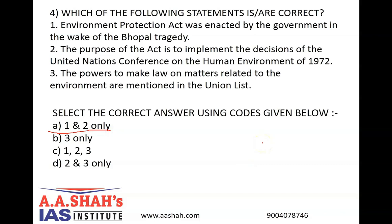The third statement is incorrect because environment is not included in any of the lists — List 1 Union, List 2 State, or List 3 Concurrent — in the distribution of legislative power by the Constitution. The Act empowers the Centre to take all such measures as it deems necessary. By virtue of this Act, the Central Government has armed itself with considerable powers like coordination of action by states, planning and execution of nationwide programs, laying down environmental quality standards, especially those governing emission or discharge of environmental pollutants, placing restriction on the location of industries, and authority to issue direct orders including orders to close, prohibit or regulate any industry, power or entity, and power to analyze samples of air, water, soil or any other substance from any place.